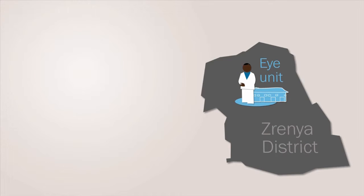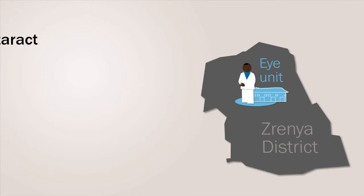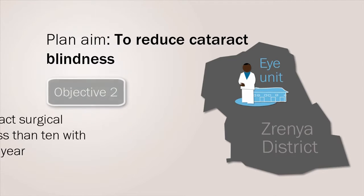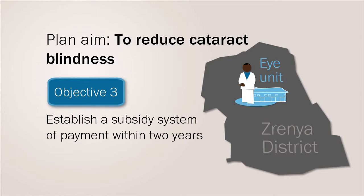Zrenia eye unit has developed a plan which aims to reduce cataract blindness in the district. The plan has three key objectives: increase cataract output by 150 surgeries each year; improve the outcome of cataract surgeries so that less than 10 surgeries have an outcome of less than 6/60 within a year; and establish a subsidy system of payment within two years.